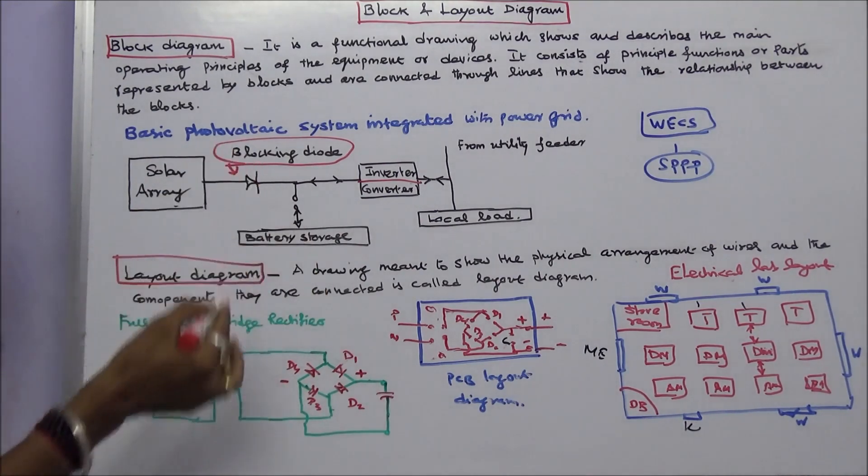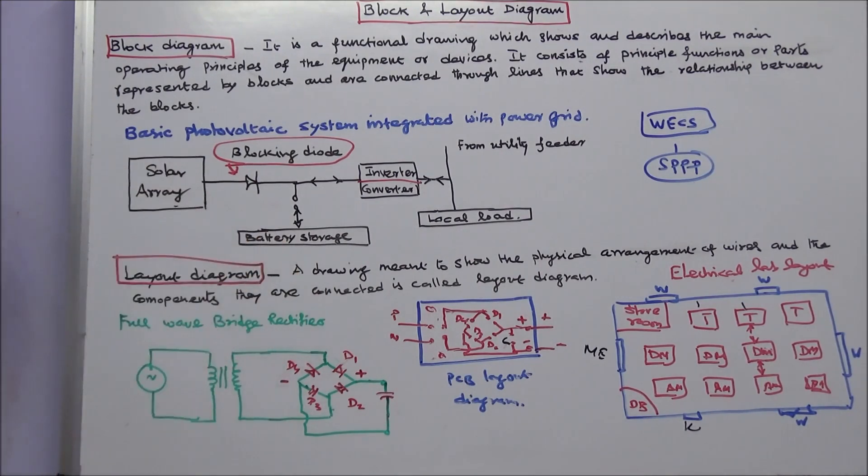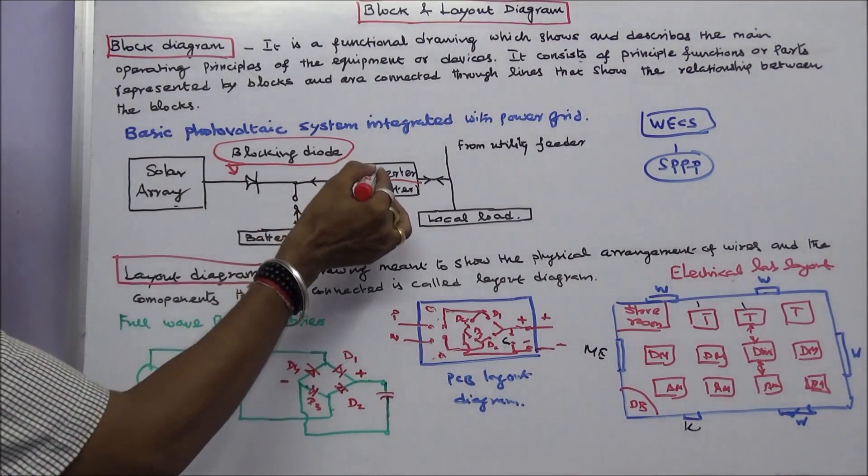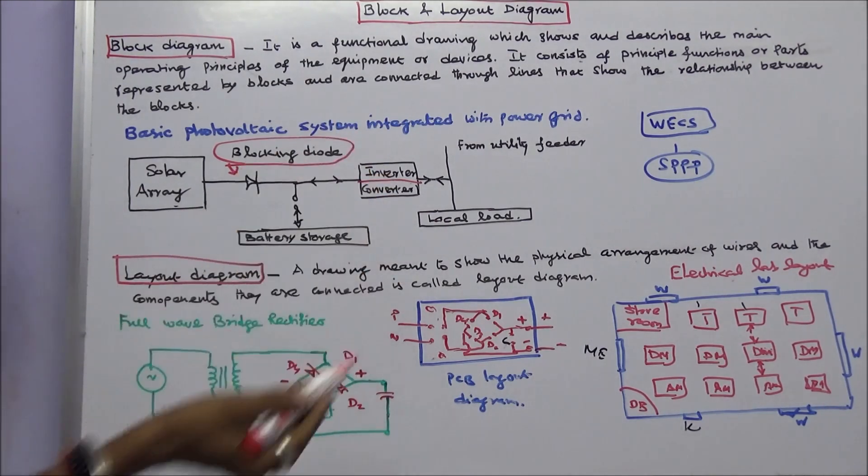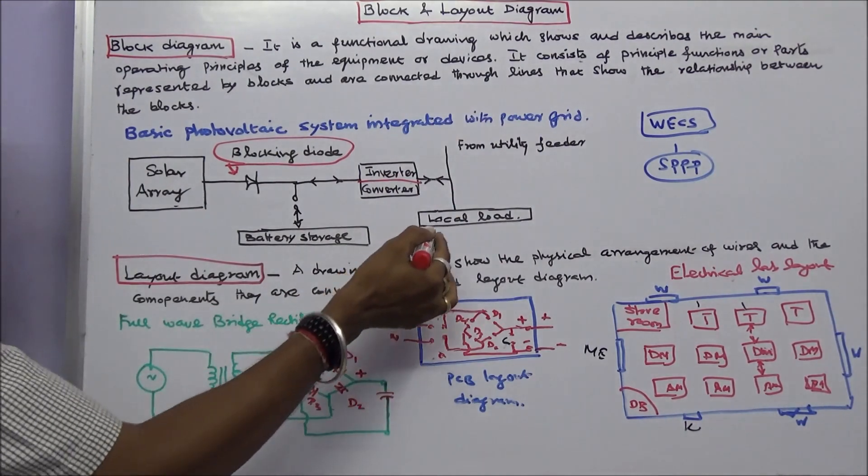So this is a blocking diode. At any cost battery power should not go to the solar array. This is an inverter and converter. This is from utility grid. This is a local load.